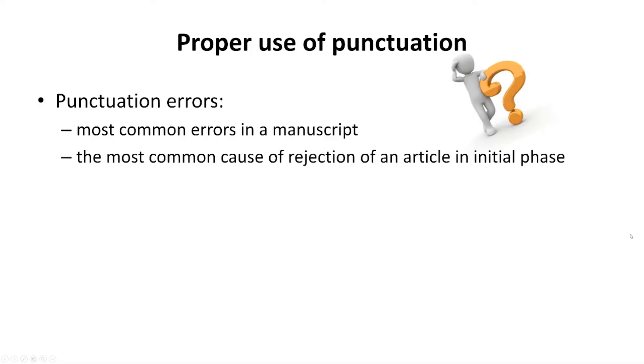Now let's talk about punctuation errors: how we can improve, how we can use punctuation effectively, and how we can identify punctuation errors. It is very important. Many times reviewers give a big question mark on a large number of punctuation errors in your manuscript. Punctuation errors are the most common errors in manuscripts and the most common cause of rejection in the initial phase.